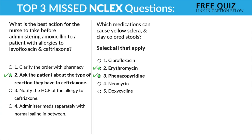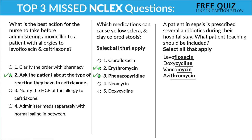Question three: a patient is in sepsis and is prescribed several antibiotics during their hospital stay. What patient teaching should be included? See the exhibit list of medications. Levofloxacin and doxycycline — both require no sun exposure. Doxycycline is not baby safe; think about cycling on a bike, it's not safe for pregnant patients. Vancomycin — remember these are '-mycins'; they kill the kidneys. Creatinine over 1.3 means bad kidneys; urine output 30 mLs per hour or less means the kidneys are in distress. Azithromycin prolongs QT intervals and throws the liver out of whack.